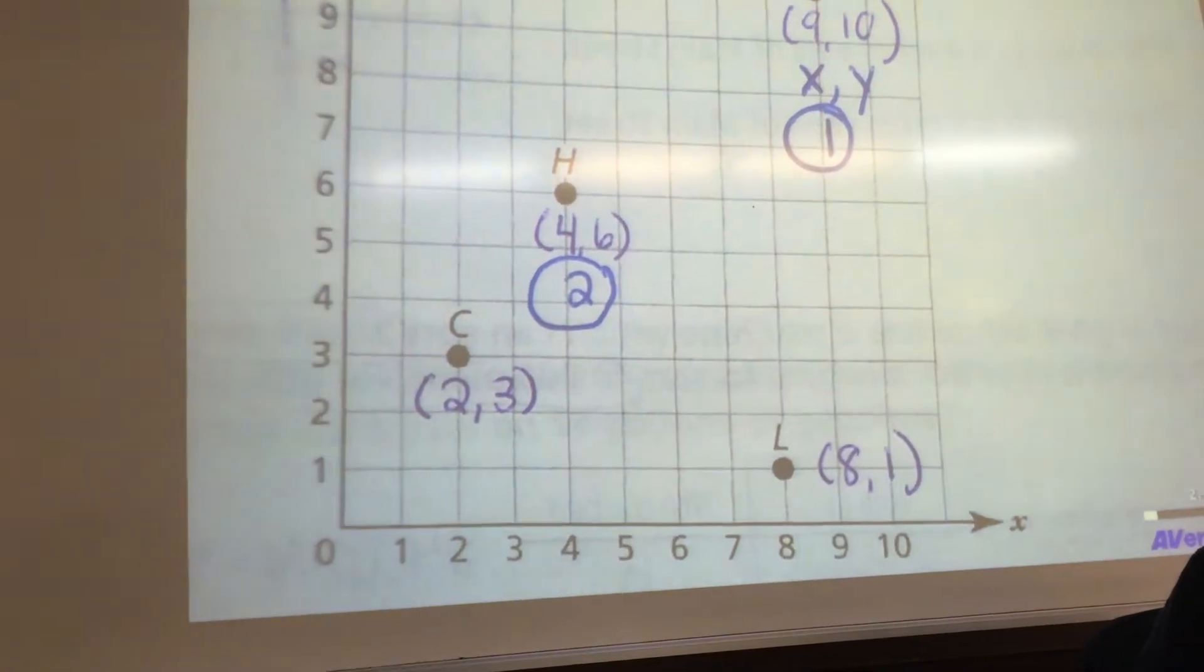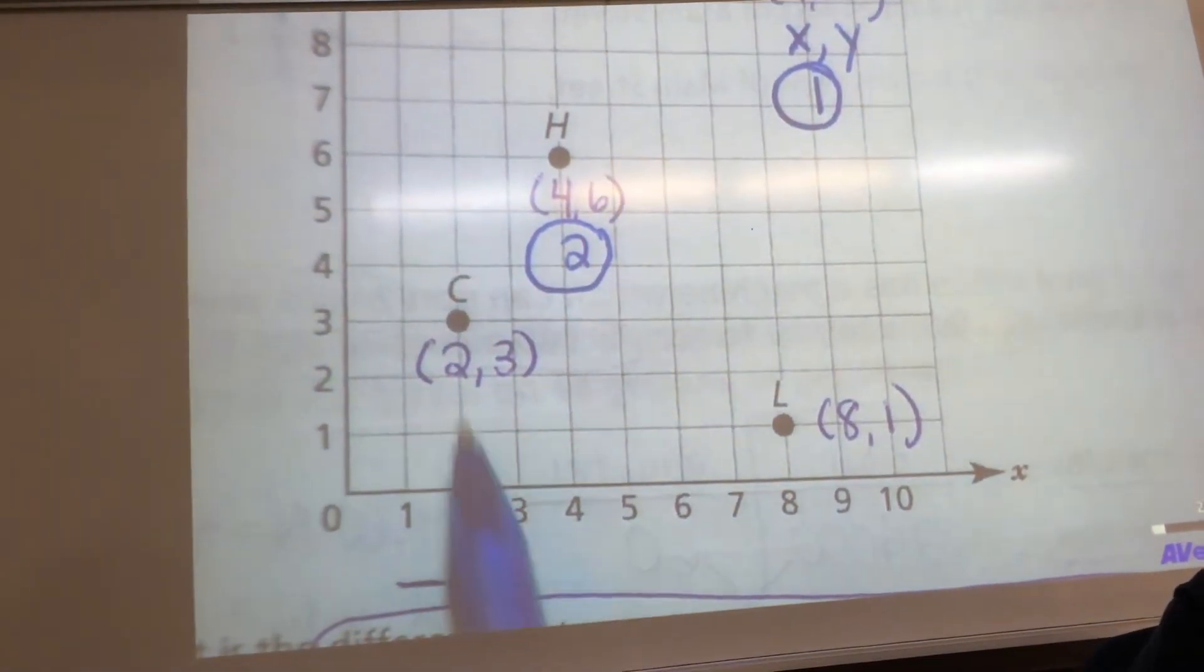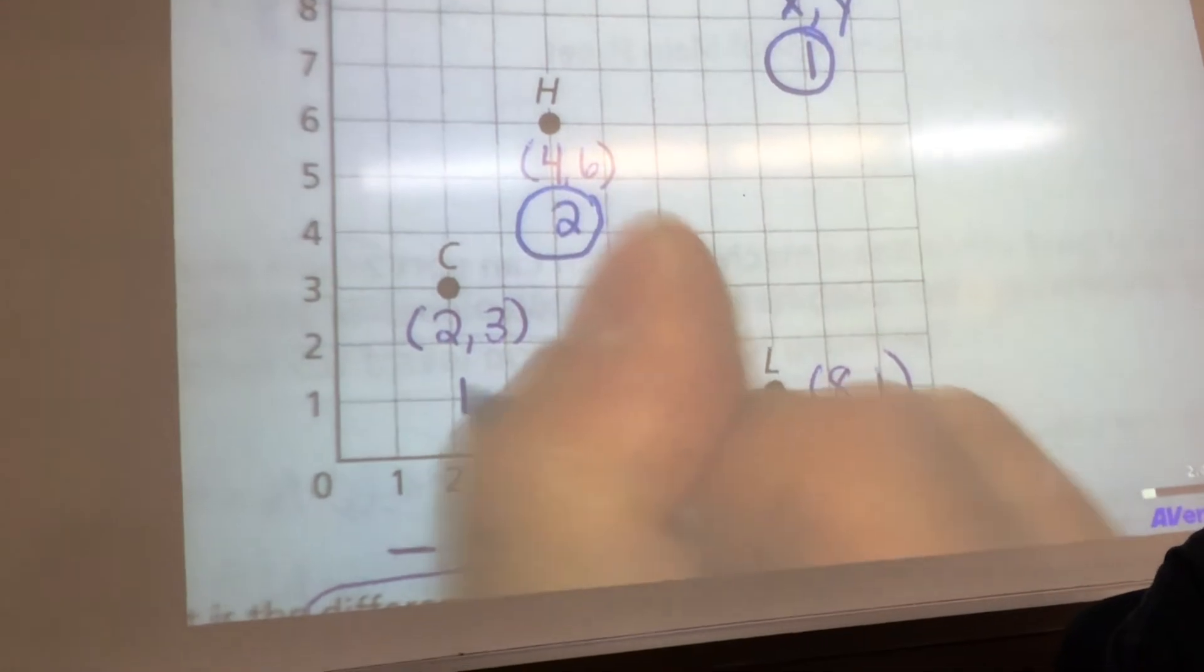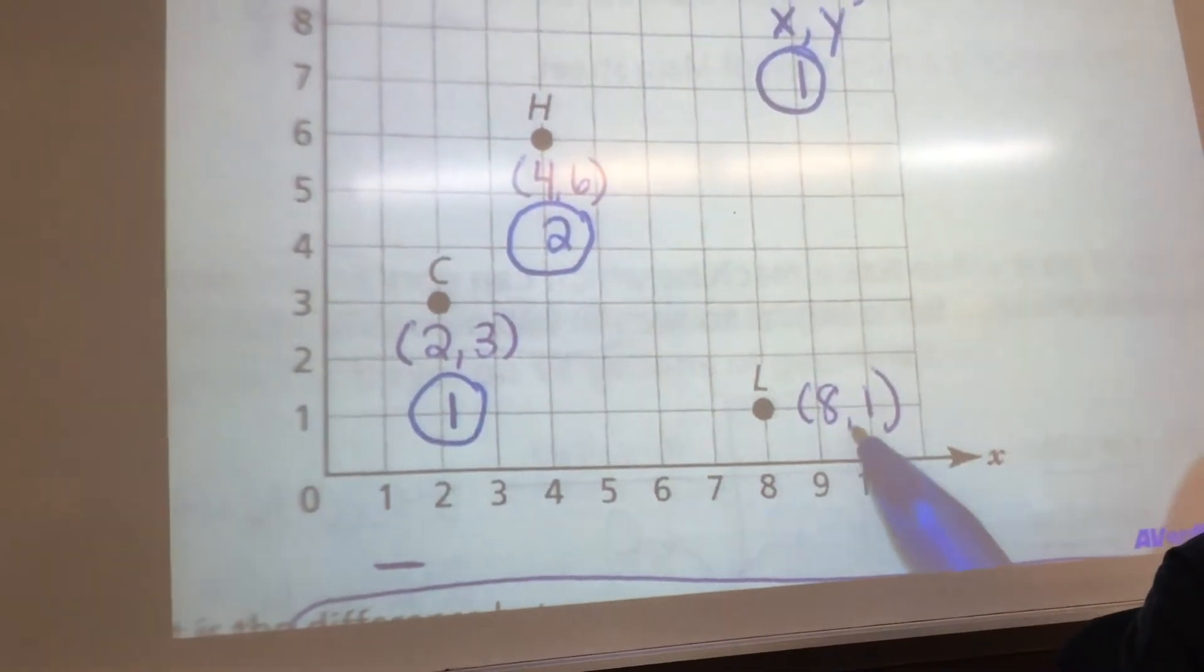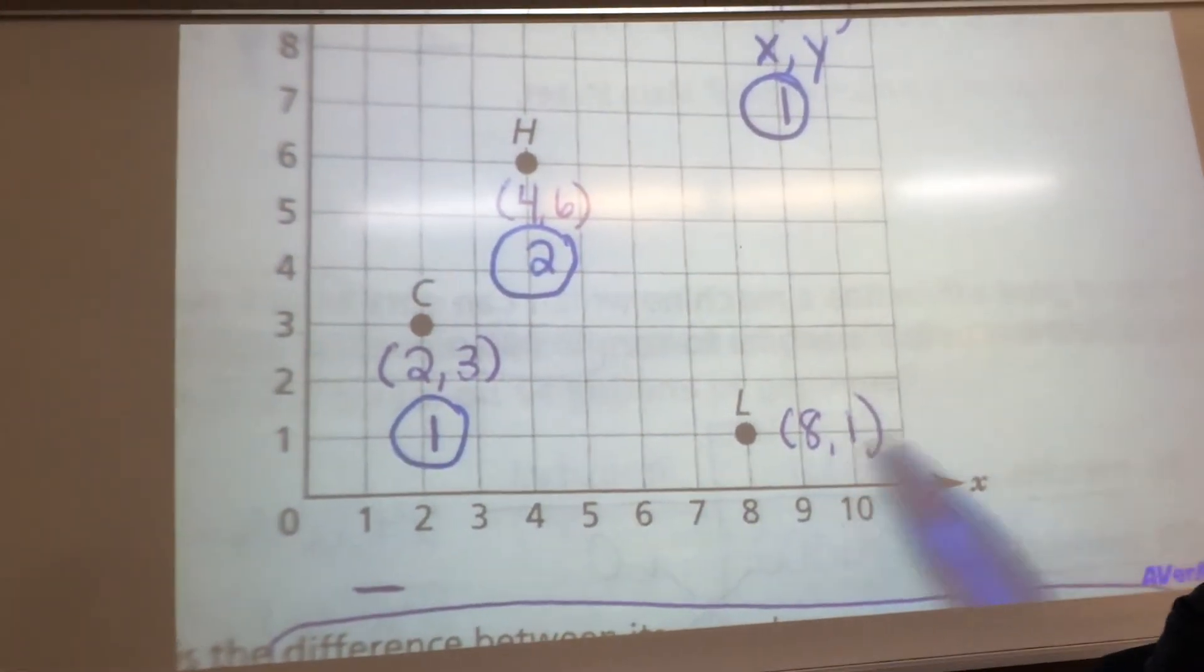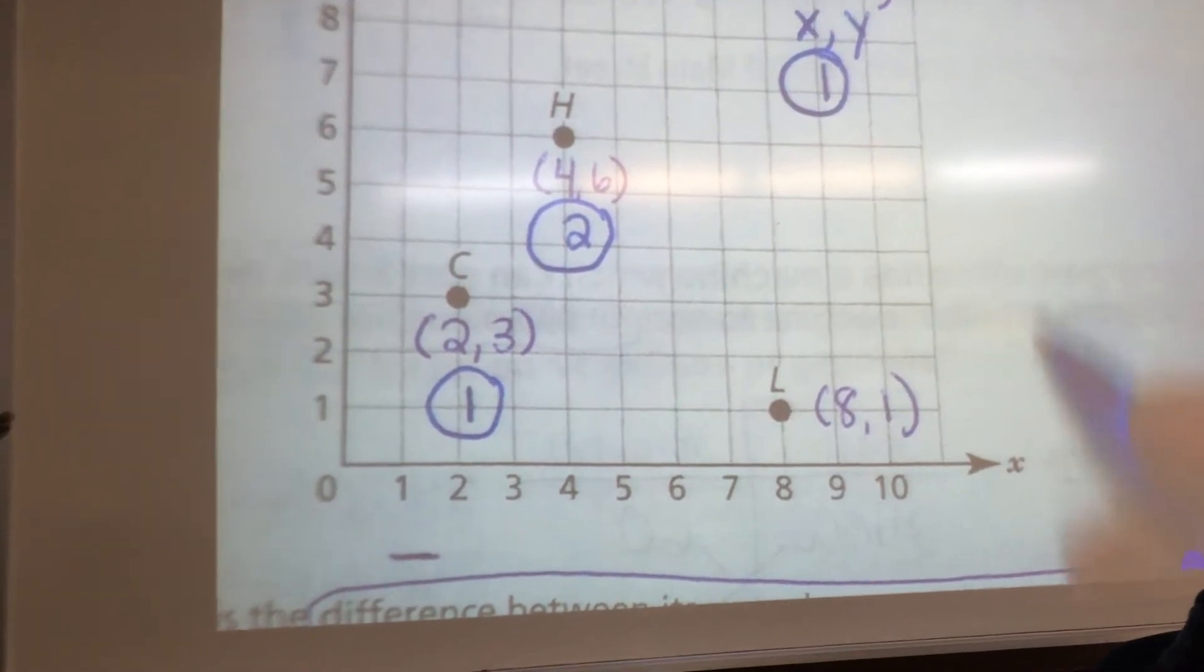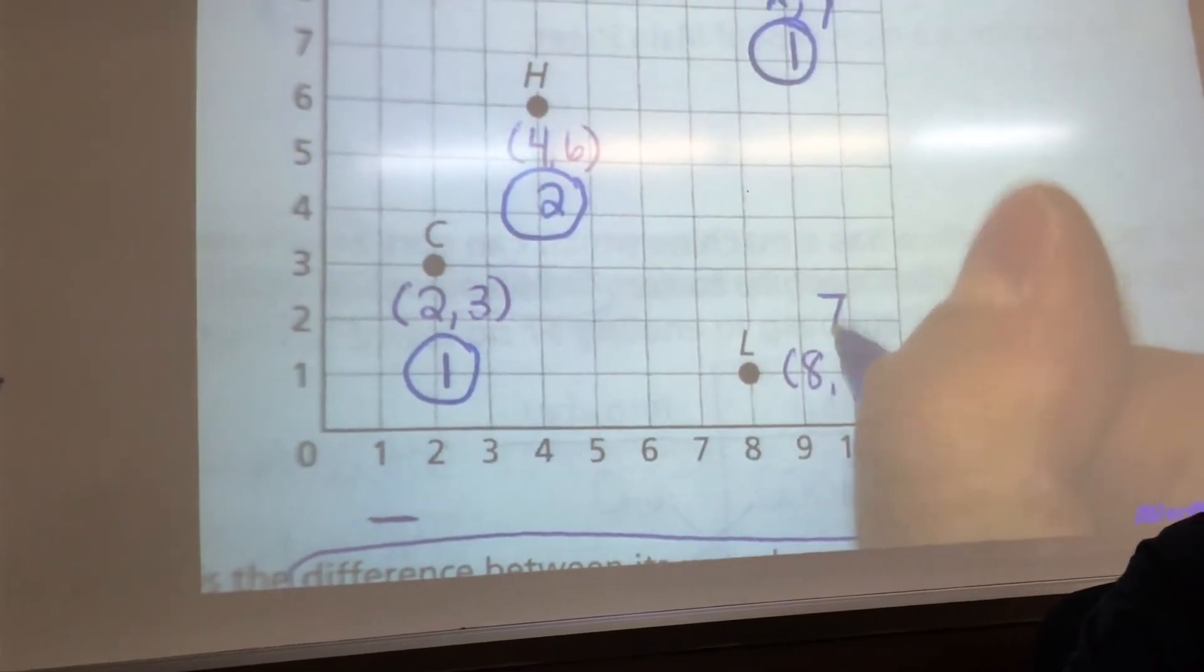You see what we're doing here, we're just subtracting each coordinate. So this, the difference is one. And this one here, oh my goodness, the difference between eight and one, eight minus one, that makes seven.